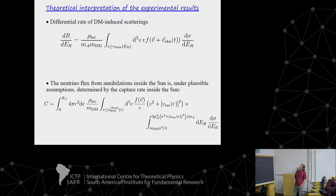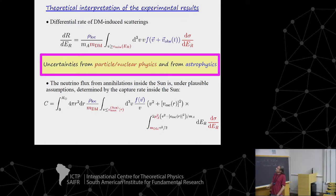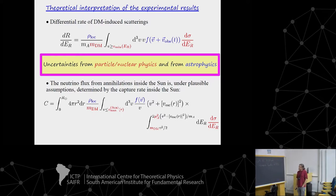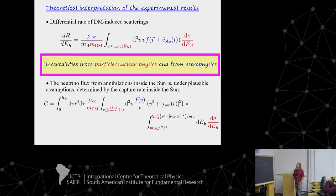What is important for this talk is to emphasize that in these formulas we have several uncertainties. We don't know what is the dark matter density, we don't know what is the velocity distribution of dark matter particles in the solar system, we don't know the dark matter mass, and we don't know how dark matter particles interact with nuclei. We have lots of uncertainties that we must deal with to translate experimental results into theory parameter space.